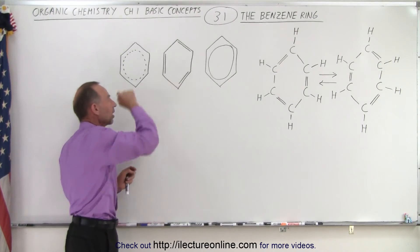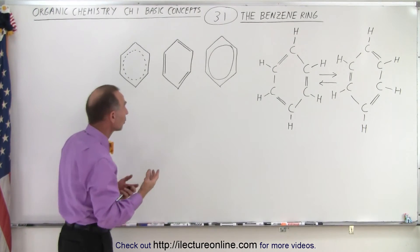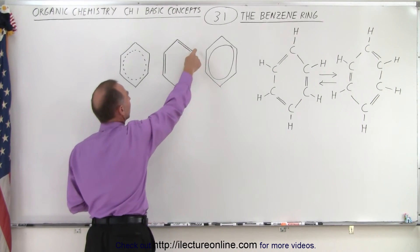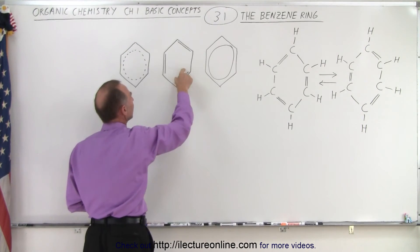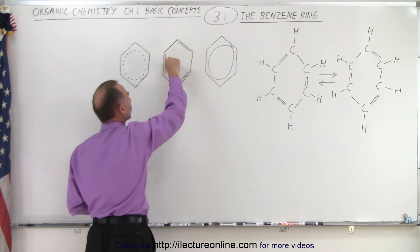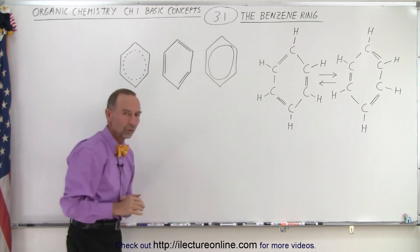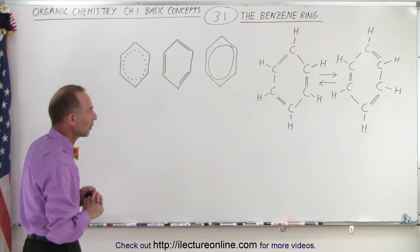However, we can also use this symbol here. Again you have the six points here that each one represents a carbon, and then you can see that there's an alternate single to double bond. So it's a simplistic form of writing or making a symbol for the benzene ring.